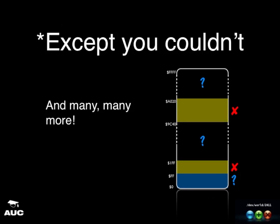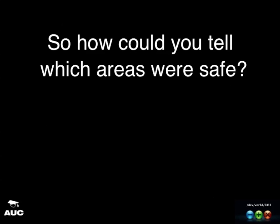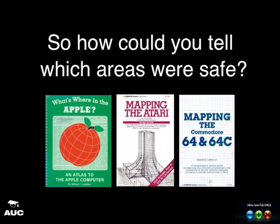There were many other locations you couldn't use — near the top of memory was mapped to ROM. To know where you could put your code, you needed a thick book with all that information. Fortunately, things have progressed since then.